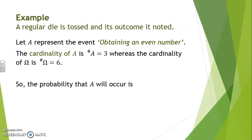So the probability that A will occur is 3 over 6, or in this case 50%, or 0.5. All of these are acceptable presentations for probability.